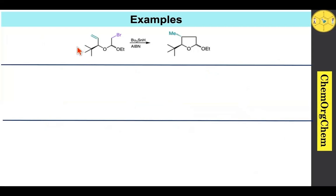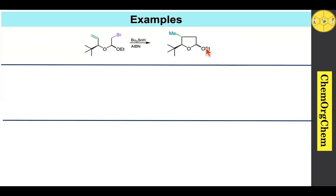The first example: here you see the bromoacetal part. When you use this reaction condition, which readily generates the radical, then followed by attack taking place, which produces this five-membered ring system. Here we note the stereochemistry for this reaction. The tetrahydrofuran group is present in the top face, while the alkyne is present in the bottom face. Therefore, this cyclization takes place from the bottom face, which produces this corresponding product.